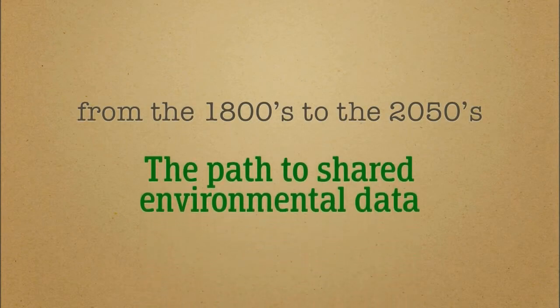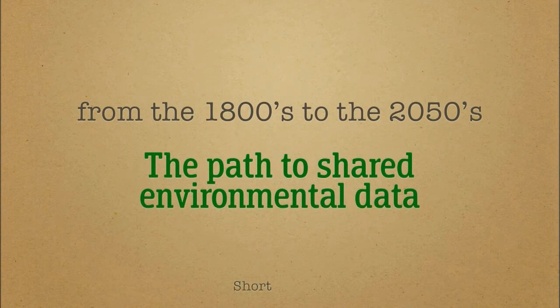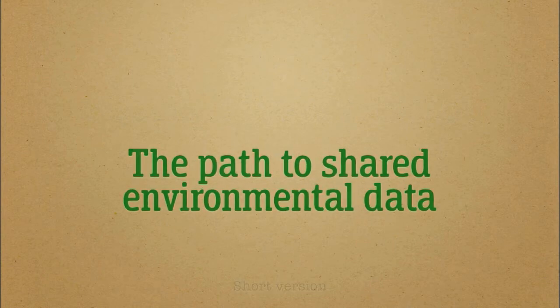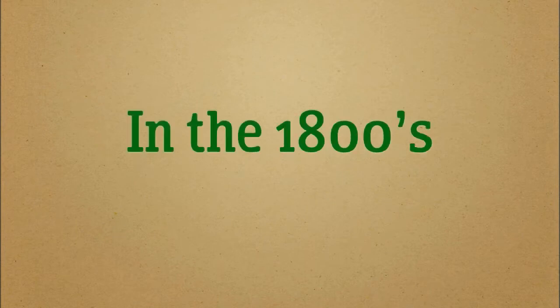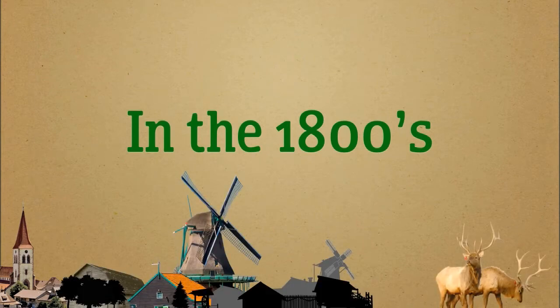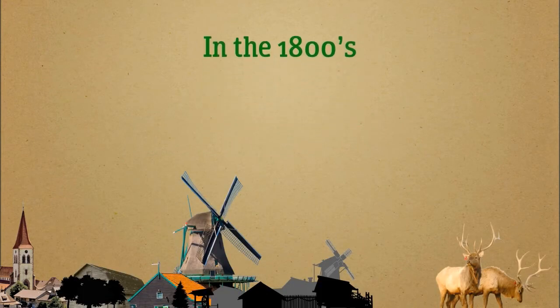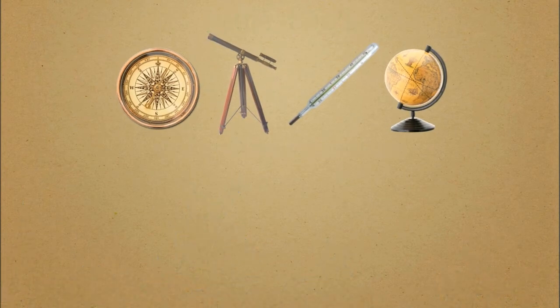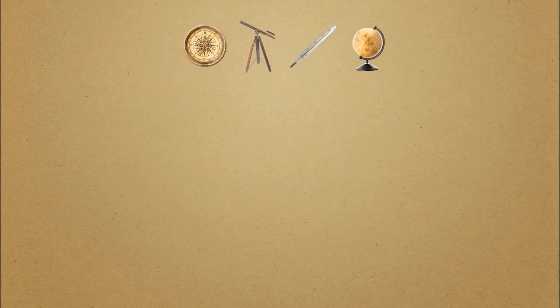Come with me on a journey through time and space from the 1800s to a not-so-distant future in the 2050s. Back in the 1800s, scientists began to systematically observe the environment with basic instruments so that they could improve our knowledge about the world and translate that knowledge into maps.